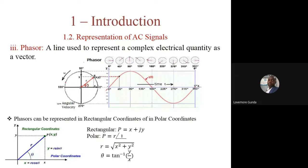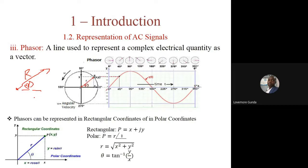A phasor is just like a vector line that represents a complex electrical quantity. If you draw an arrow and you tell us the angle of that arrow and also its magnitude, then you are representing a sinusoidal signal as a vector — that is what we call a phasor.